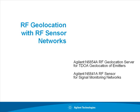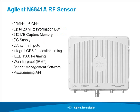This is a demonstration of RF geolocation using a network of RF sensors. We will be using the Agilent N6841A RF sensor, which has a frequency range of 20 MHz to 6 GHz with an information bandwidth of up to 20 MHz. It has half a gigabyte of capture memory, DC power, and two antenna inputs.